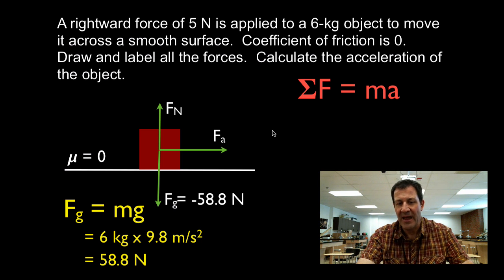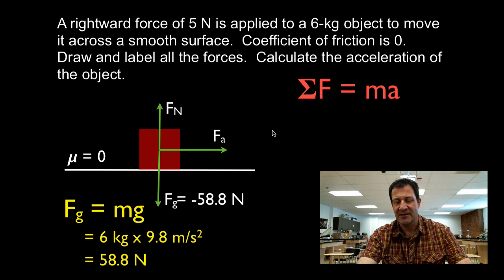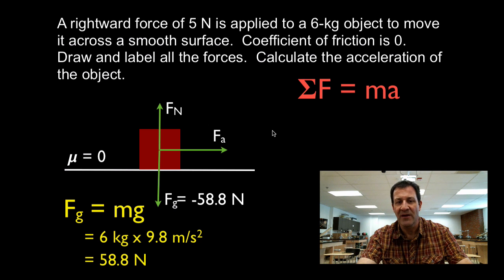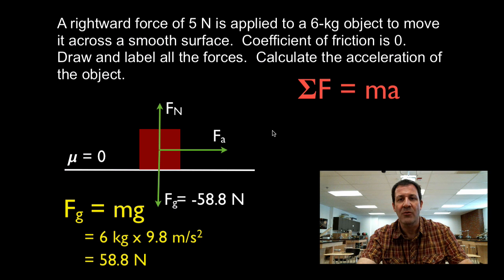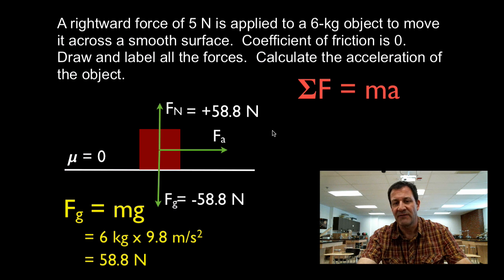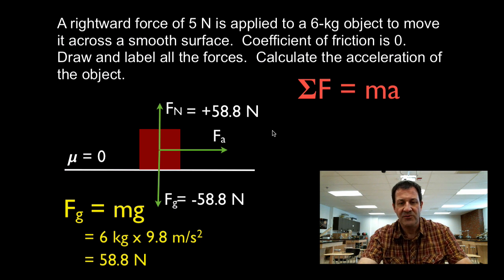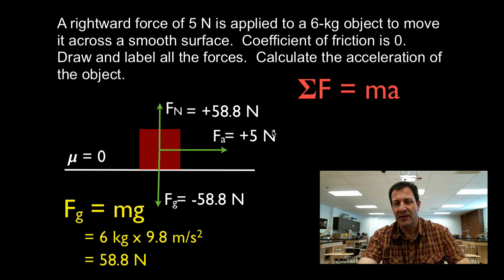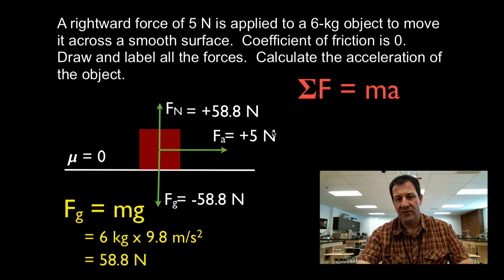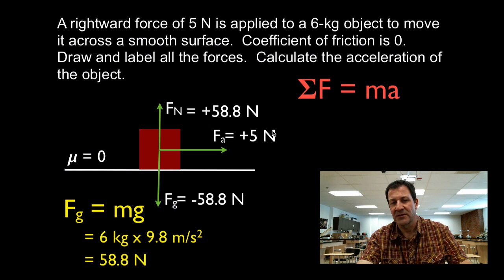We write that down with a negative sign since it's pointing downwards — down is the negative direction. The object is not moving up or down, so the normal force must be equal and opposite. We put down that the normal force is plus 58.8 Newtons in the upward, positive direction. The last force is the applied force, which is just plus 5 Newtons, because to the right is positive in this case.